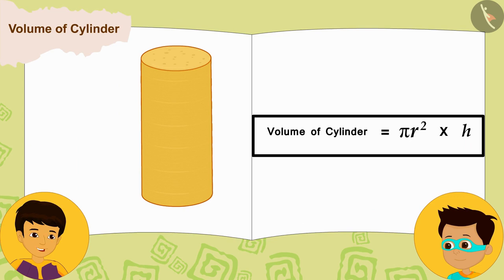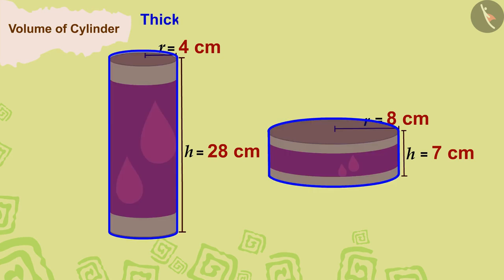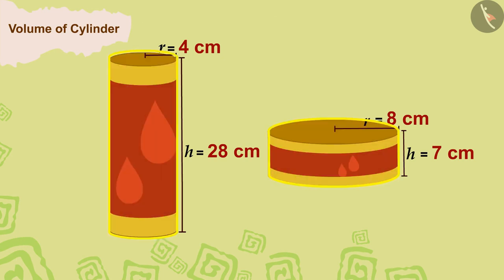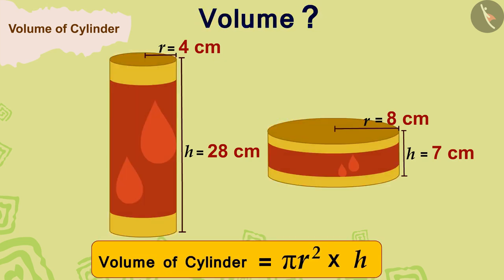Friends, since the thickness of the boxes is negligible, we can say that the space occupied by ghee in the box, which is also its capacity, is equal to the space taken up by the box, which is called its volume. Now can you find the volume of both these boxes? Pause the video to try it yourself and then match your answer.